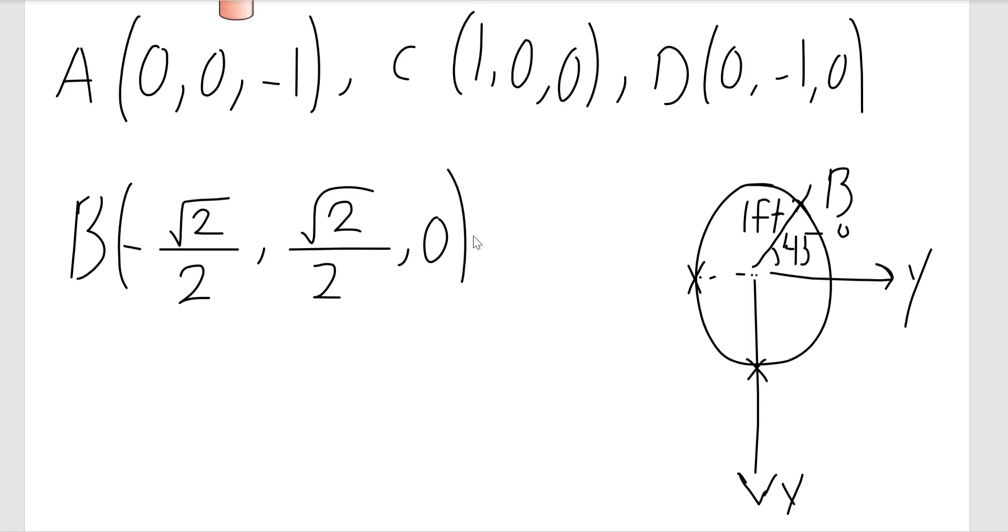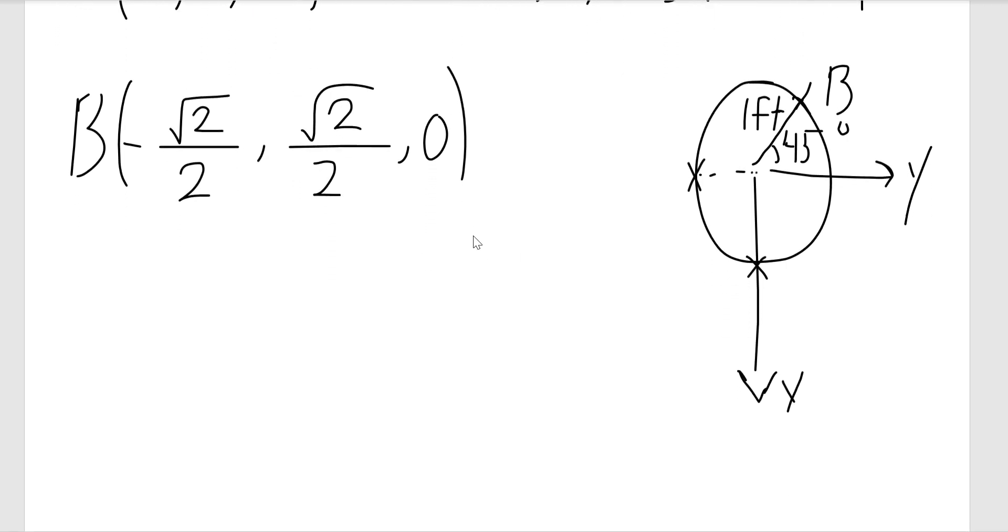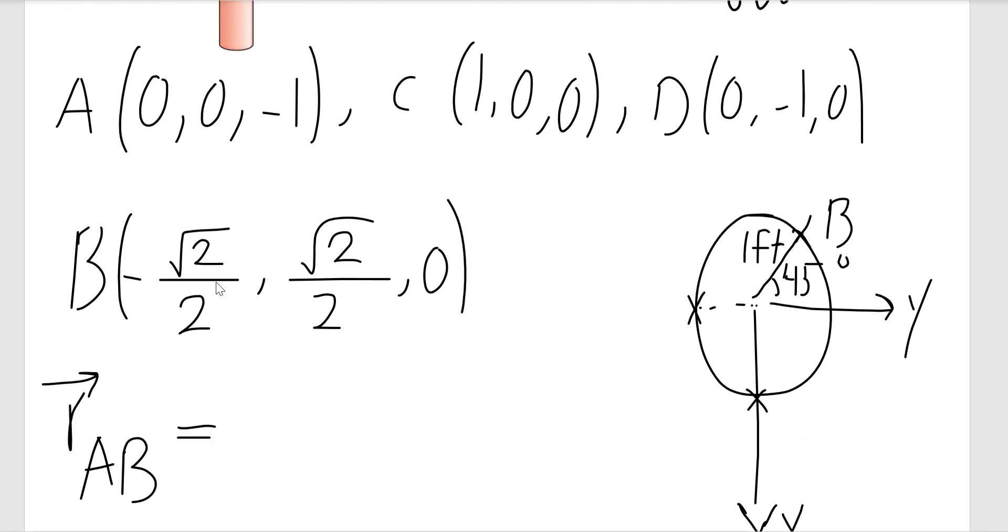Now that I have the coordinates, I can find the position vectors and therefore the unit vectors. So rAB is the coordinate of B minus the coordinate of A. That's negative √2/2 minus 0, so negative √2/2 i, plus (√2/2 - 0) j, plus (0 - (-1)), so plus 1 k.